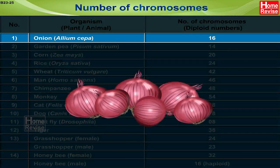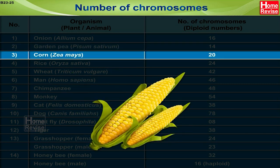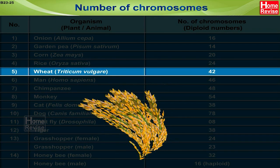This table shows the number of chromosomes in some plants and animals. In onion (Allium cepa), the diploid number of chromosomes is 16. In garden pea (Pisum sativum), it is 14. In corn (Zea mays), it is 20. In rice (Oryza sativa), it is 24. In wheat (Triticum vulgare), it is 42.